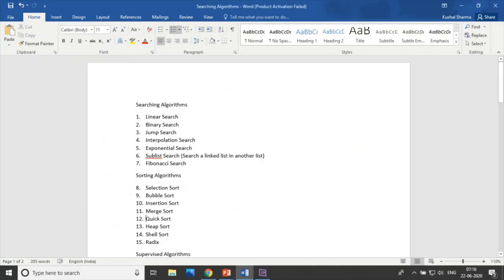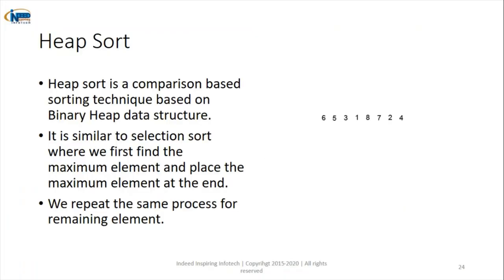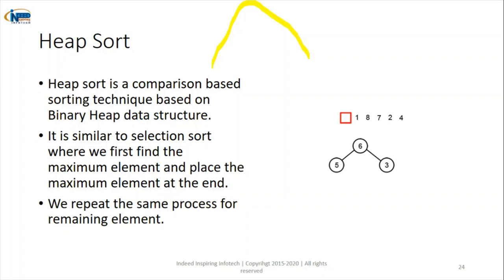The thirteenth algorithm is heap sort. Heap is a data structure, and this sort works on a heap data structure. As shown in the diagram, we create a heap and based on that heap the data gets sorted. The approach is to find the maximum element and place it at the end, then repeat. It is similar to selection sort but follows the heap data structure.